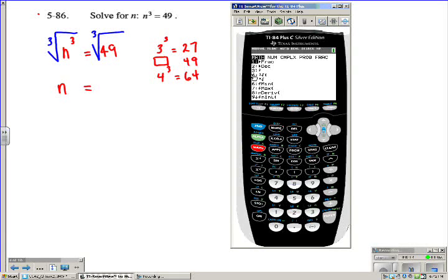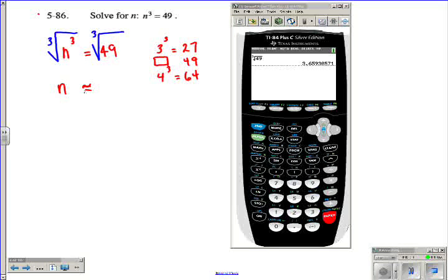and then we look at option number four, and we type in 49, and press enter, it's going to give us approximately 3.6593, so we'll just say approximately 3.66. Let's change this to approximately 3.66.